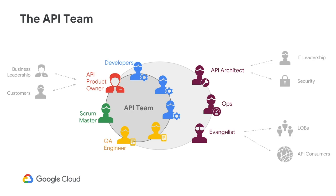They are constantly working together. The outer ring represents also core team members who may not be fully dedicated to the API team and might be partially allocated over time to support multiple API teams. The role of connecting with non-core team members are represented with arrows showing specific individuals who should take ownership of these key activities.